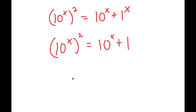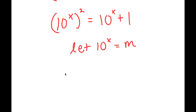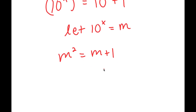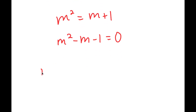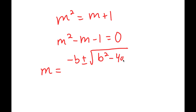From here, I'm going to let 10 to the power of x equal to the variable m. So now I have m squared is equal to m plus 1, and this turns into m squared minus m minus 1 is equal to zero. Now I'm going to use the quadratic formula to solve this. The quadratic formula is negative b plus or minus the square root of b squared minus 4ac, all over 2a.